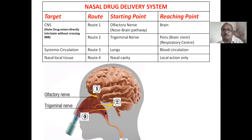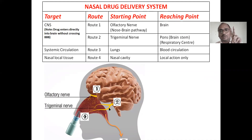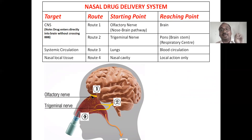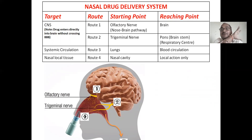Without entry through the blood-brain barrier, the drug molecules will directly enter into the brain. This is a brain — the entire brain is surrounded by the blood-brain barrier, except two places. Those two places are directly open through the nose. The olfactory nerve is exposed at the top of the nasal cavity — the blood-brain barrier is absent there. The olfactory nerve is directly projected from the brain into the nasal cavity.